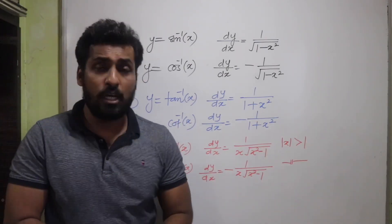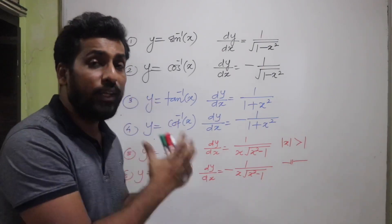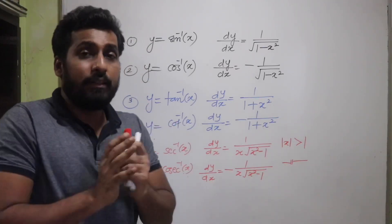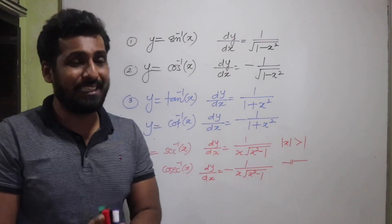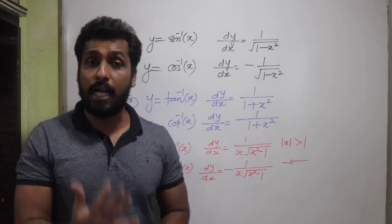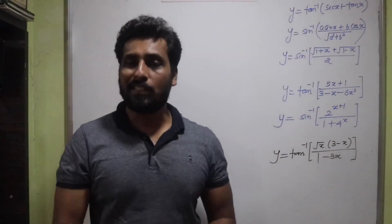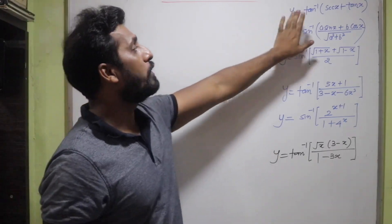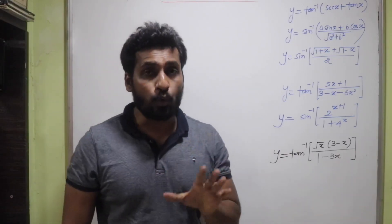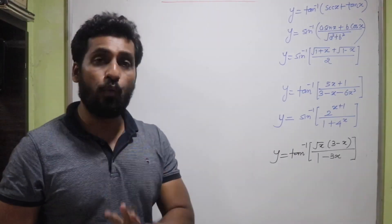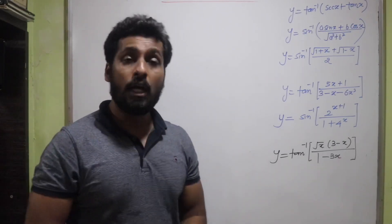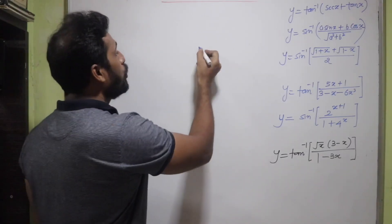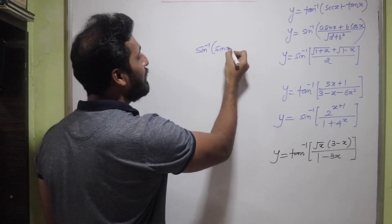We are going to understand how these formulas were derived in a different lecture. Now let's begin with some questions based on inverse trigonometric functions. The first question is y = tan⁻¹(sec x + tan x). When solving problems on inverse trigonometric functions, try to make use of basic trigonometric formulas.